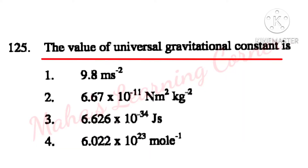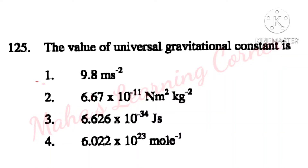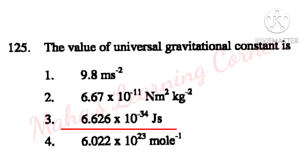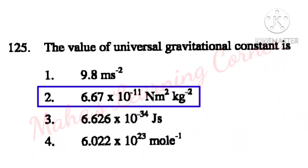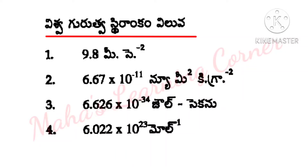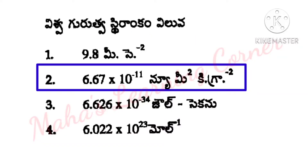The value of universal gravitational constant is? Options: 9.8 m/s², 6.67 × 10⁻¹¹ Nm² per kg², 6.626 × 10 to the power of mol. The universal gravitational constant is 6.67 × 10⁻¹¹ Nm² per kg². Option 2 is the correct answer.